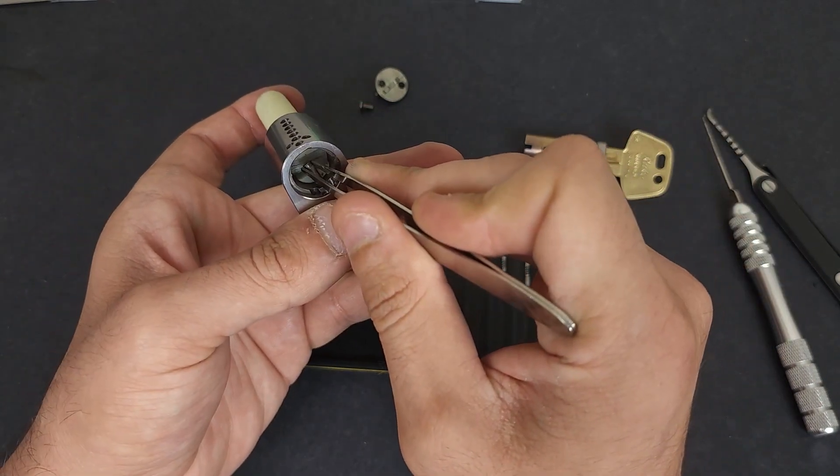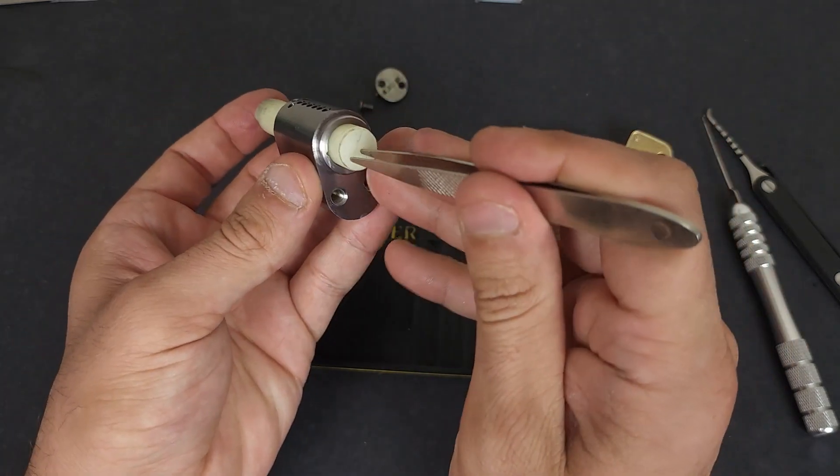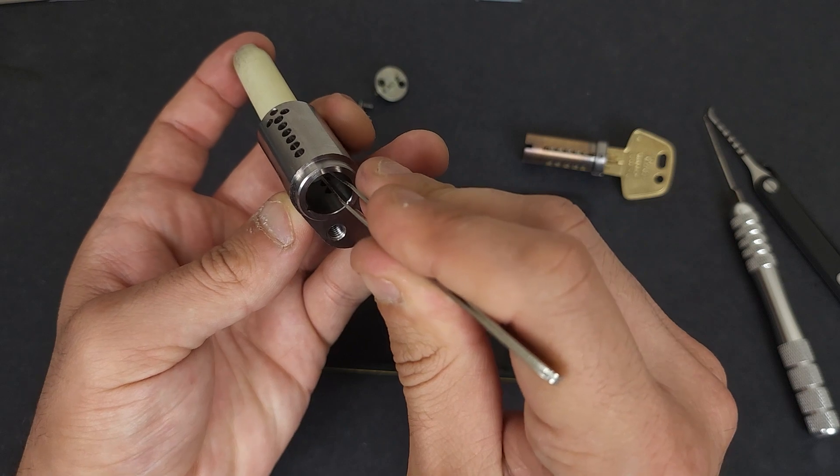So, well, to be totally fair, the barrel spools gave me a lot of trouble. That, by far, is the hardest part of the lock for me.